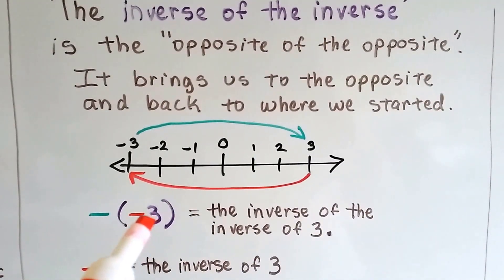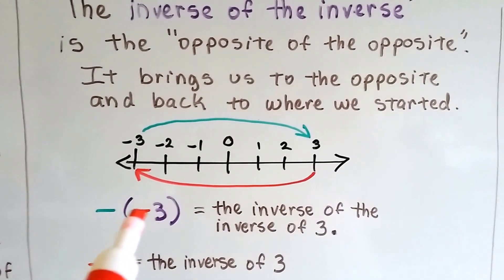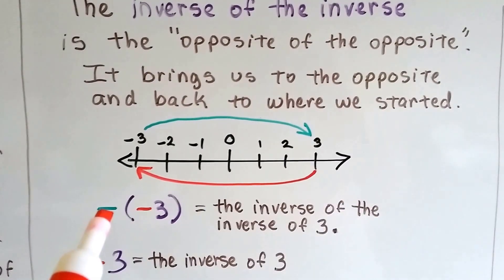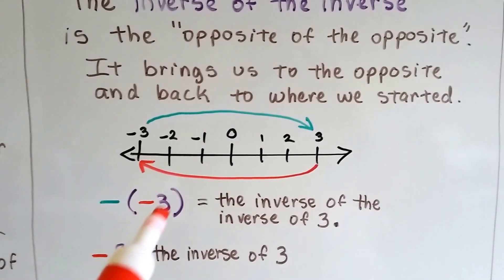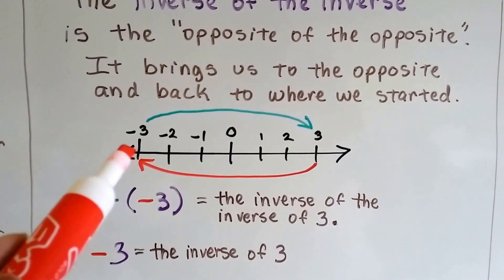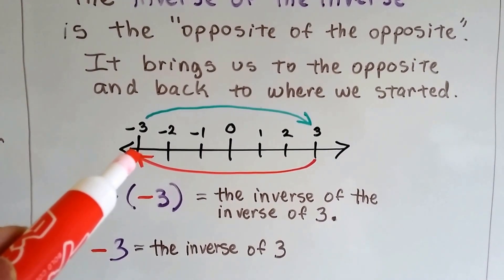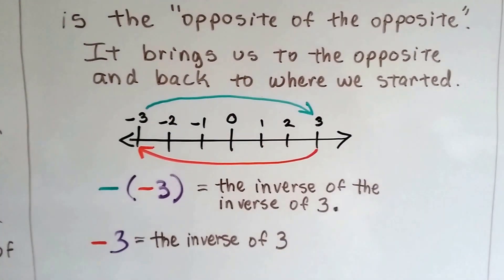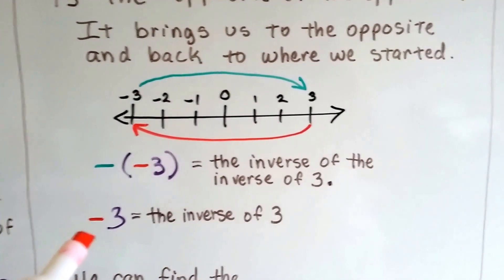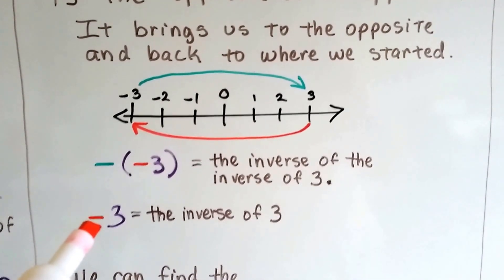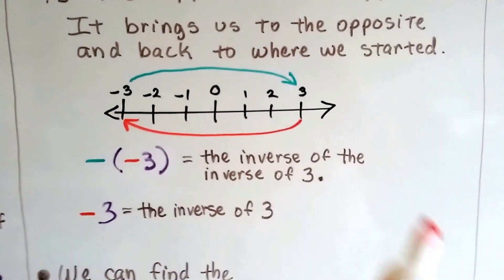The inverse of the inverse of 3: we're going to start at 3. We've got a red inverse sign in front of this, and then a green one. We're going to start at 3 and get to the inverse of 3 — that's what this says, the inverse of 3. So we started at 3 and got to the inverse of 3, inside the parentheses. Now, to get the inverse of the inverse of 3, we just go back to 3 again. So the inverse of the inverse of 3 is 3. As soon as we put another inverse symbol in front of it, it takes us back to the other side.